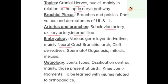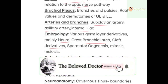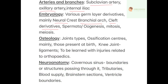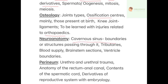Also important from embryology: spermatogenesis, oogenesis, mitosis, and meiosis. From osteology, focus on joint types, ossification centers (mainly those present at birth), and knee joint ligaments with injuries related to orthopedics. From neuroanatomy, the most important part is the cavernous sinus — its boundaries, structures passing through it, tributaries, blood supply, brainstem sections, and ventricle boundaries.